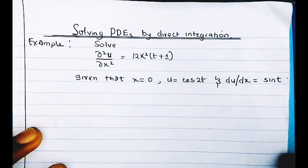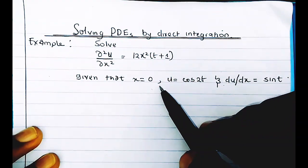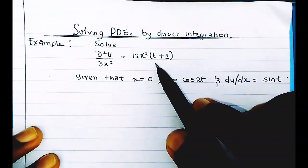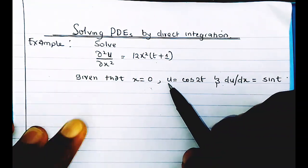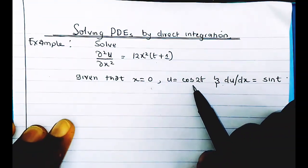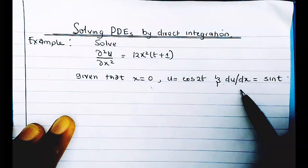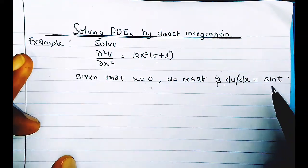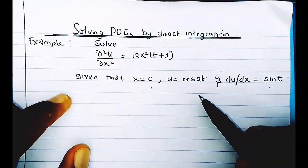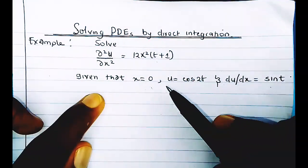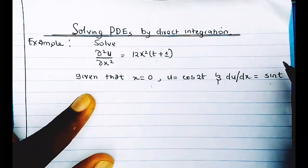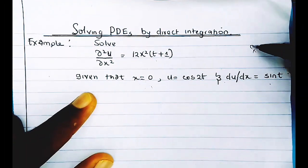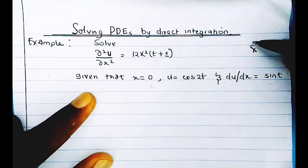When you are asked to solve a PDE by direct integration, the boundary conditions will be given in a specific form: when a particular variable, say x, is equal to zero, the dependent variable u will be given as a function of t, and du/dx will also be given as a function of t.